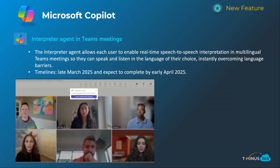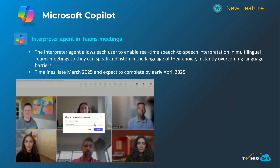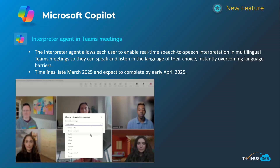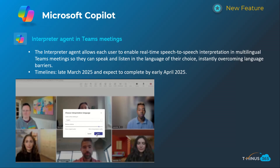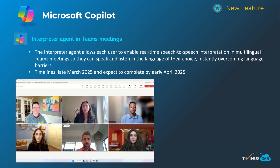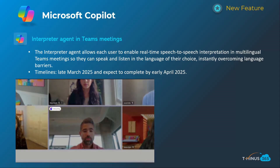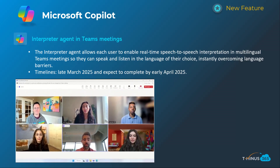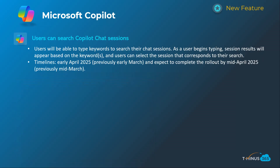Shifting into Microsoft Copilot, the first announcement is related to a legacy Ignite announcement about the Interpreter agent, which allows you to have an agent that automatically translates from one language to another. You can record your voice as a user so it sounds like the translation is coming from you. The timeline on this one is late March, complete by early April.